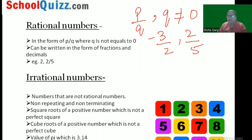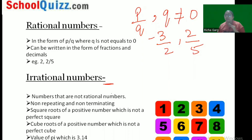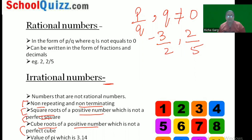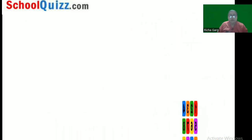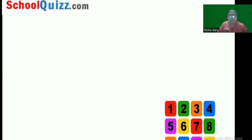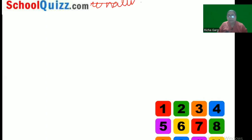But what are irrational numbers? One simple definition: numbers which are not rational numbers are your irrational numbers. But there are a lot of conditions to go through — they are non-repeating and non-terminating, square roots of a positive number which is not a perfect square, cube roots that are not perfect cubes, and the value of pi which is 3.14. We are going to study these one by one.